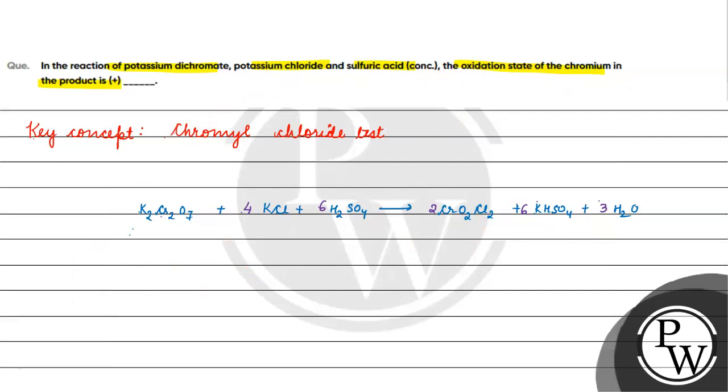In the product, we need to find the oxidation state of chromium. Let the oxidation state be x. So x + 2(−2) + 2(−1) = 0. The value of x comes out to be +6.